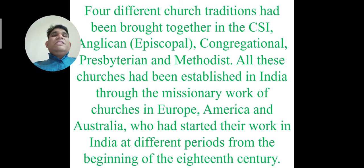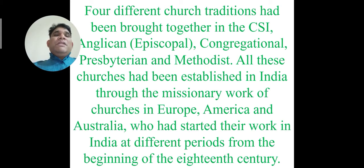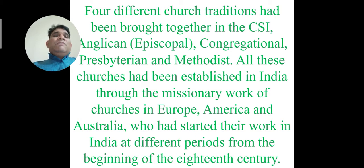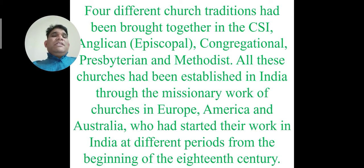Four different church traditions had been brought together in the CSI: Anglican, who were Episcopal, then Congregational, Presbyterian, and Methodist. All these churches had been established in India through the missionary work of churches in Europe, America, and Australia, who had started their work in India at different periods from the beginning of the 18th century.